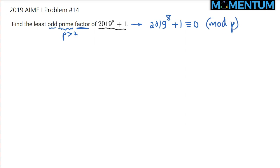This would simply imply 2019 raised to the 8th power is congruent to minus 1 modulo P. Now I can square both sides, which implies 2019 raised to the 16th power is simply congruent to minus 1 squared, which is just 1 modulo P.